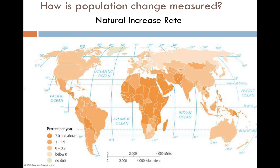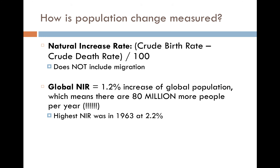When we combine the crude birth rate — how many people are being born in a given place — with the crude death rate — how many people are dying — that's called our natural increase rate. Crude birth minus crude death will logically tell us how many people are being added in a given place in a given year. The way we calculate the natural increase rate is crude birth minus crude death divided by 100. Now here's the problem with that: it does not help us account for migration.